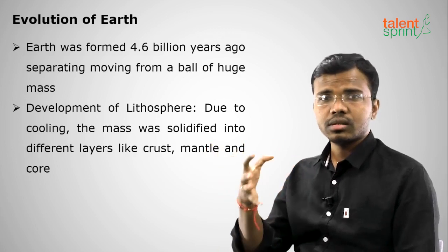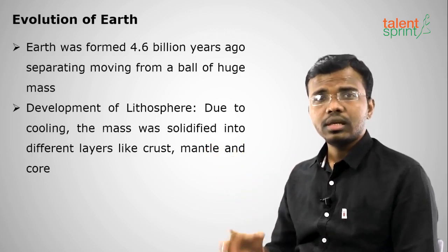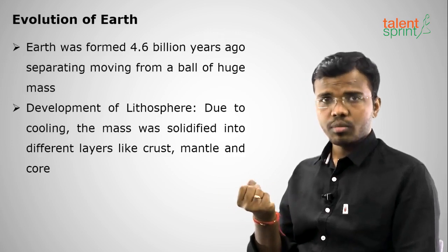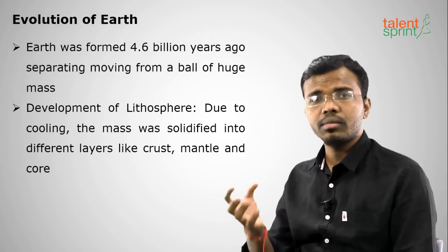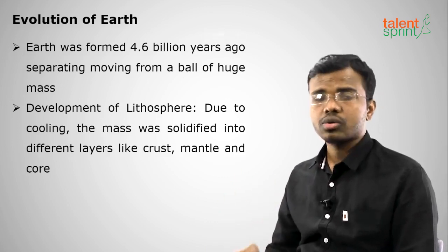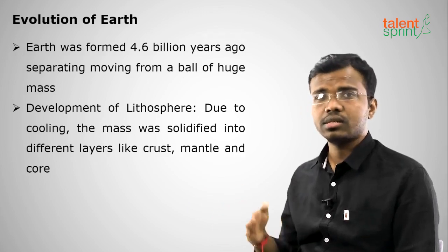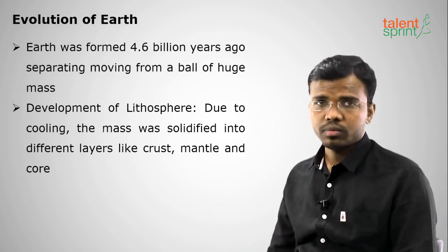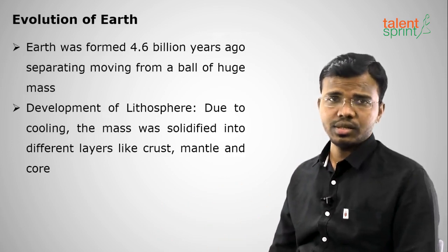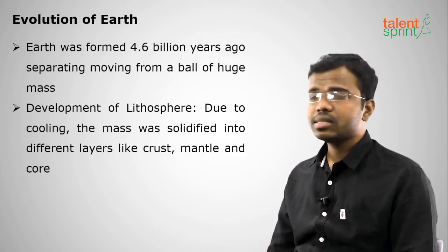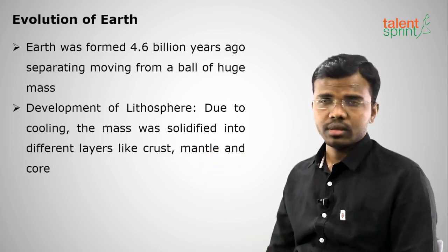There were very high temperatures on this Earth. Slowly, interacting with different gases, the outer surface of the Earth began to cool. When it begins to cool, the liquid starts to form solid — it becomes solidified in nature. Slowly it disintegrated into different layers: first the crust, then the mantle, and then the core. That is why the core still has higher temperatures.